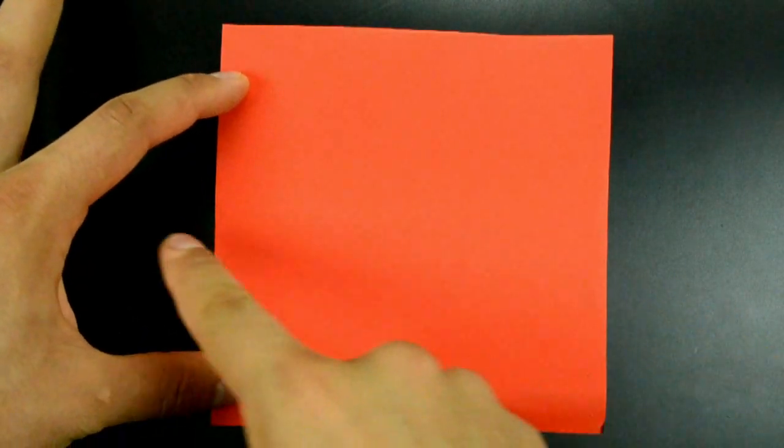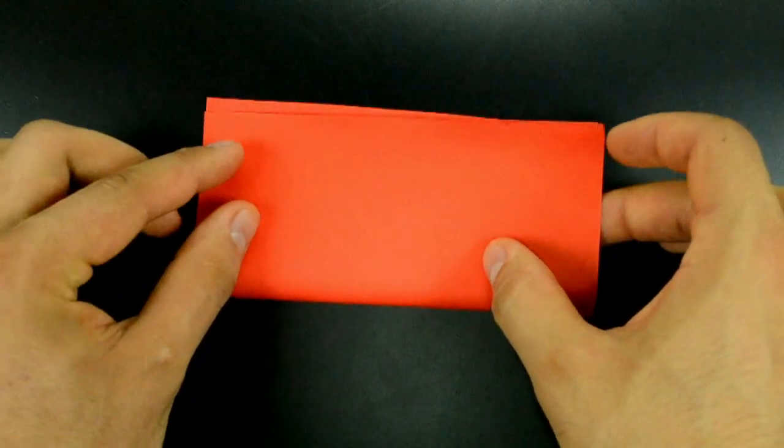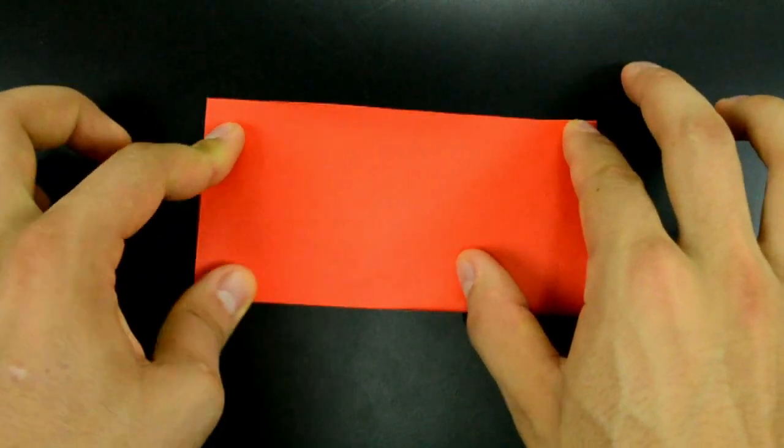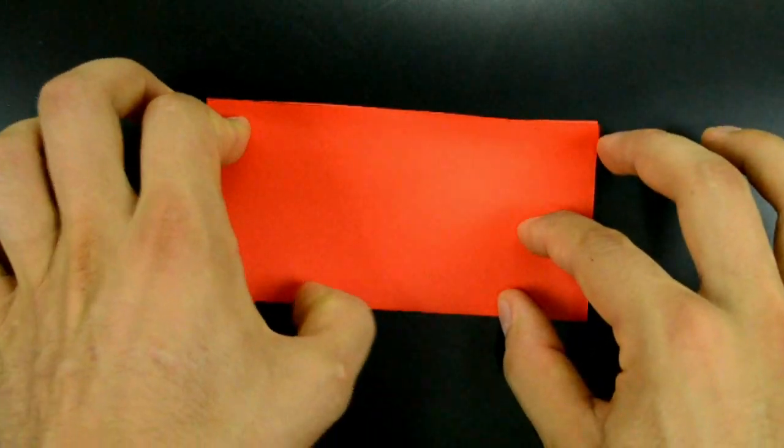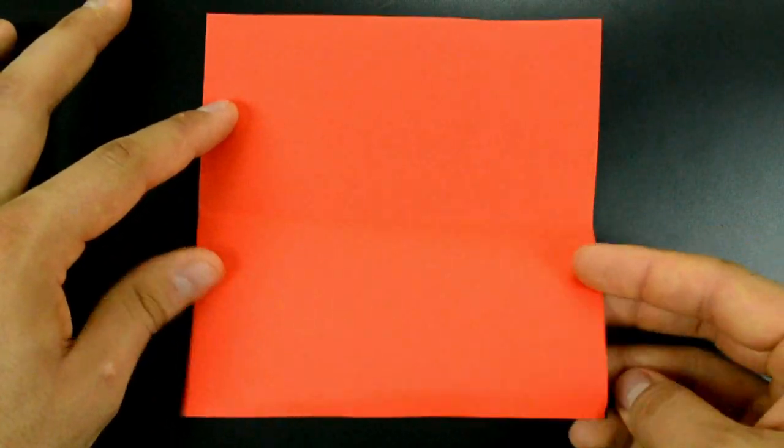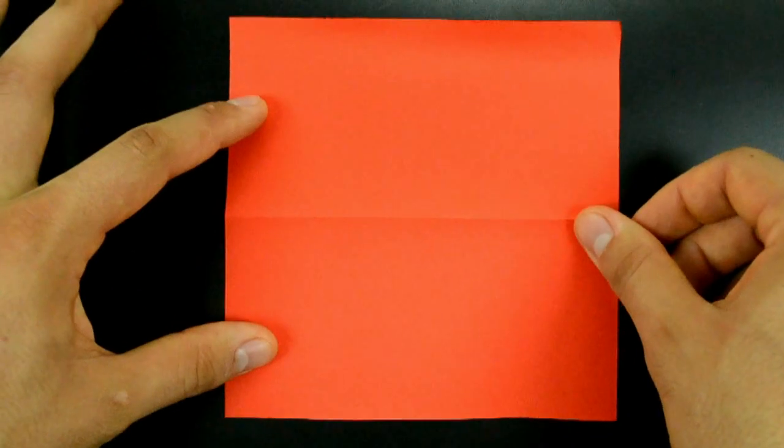The first step is to fold in half on the horizontal. Then unfold, turn over and fold in half now on both diagonals like a letter X.